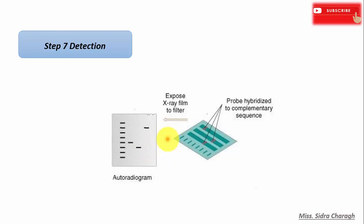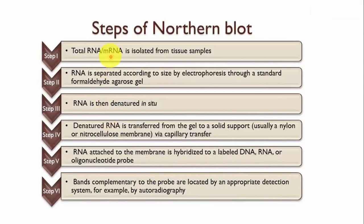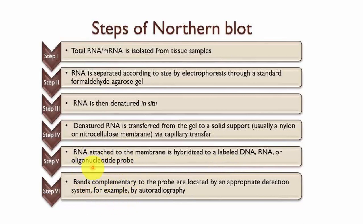The final step is detection and visualization, which always depends on the type of labeled molecule used in the hybridization step. To summarize the main steps: first, separation of total RNA or messenger RNA from tissue samples; next, separation of RNA molecules by size through formaldehyde agarose gel electrophoresis; then, denatured RNA molecules are transferred from the gel to a solid support medium by capillary transfer; RNA on the membrane is hybridized to a labeled DNA, RNA, or oligonucleotide probe; and finally, bands complementary to the probes are located by an appropriate detection system, such as autoradiography.